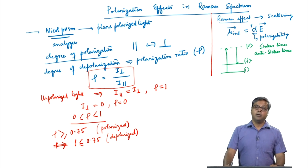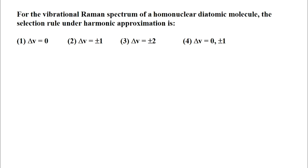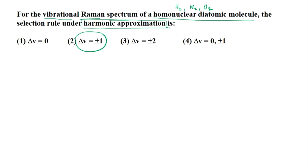We will end this lecture by solving a few problems. The first problem is a multiple choice question: for a vibrational Raman spectrum of a homonuclear diatomic molecule such as hydrogen, nitrogen, or oxygen, what is the selection rule under the harmonic approximation? As discussed, the selection rule is the same for IR and Raman vibrational transitions, and under harmonic approximation it is delta-V equals plus or minus 1. The correct option is delta-V equals plus or minus 1.